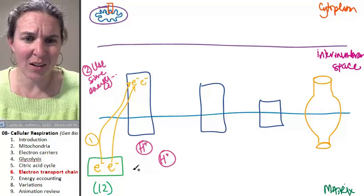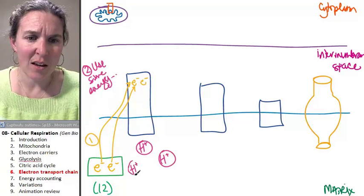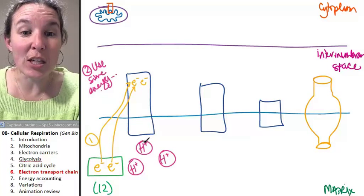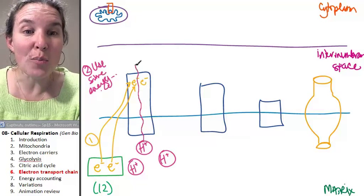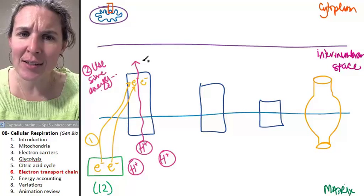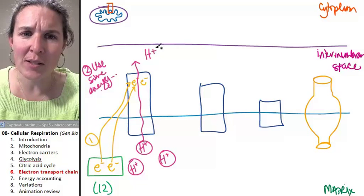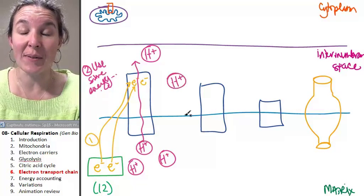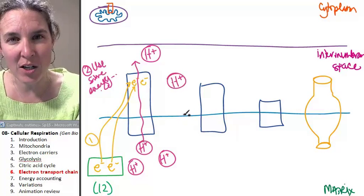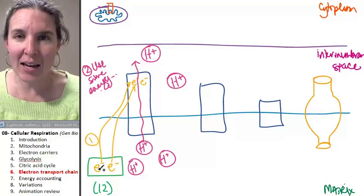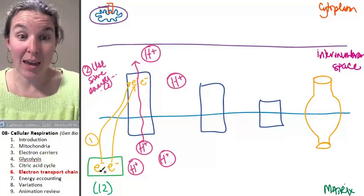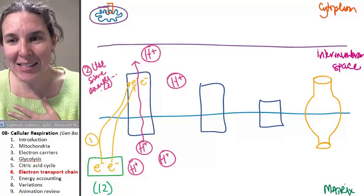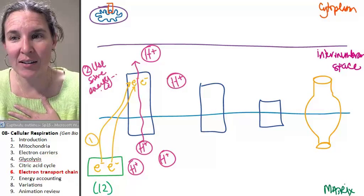You're going to be like, dude, really, what is this? The energy in the high-energy electrons is going to be used to pump hydrogen ions into the intermembrane space. And they're going in against their concentration gradient. That's how you know it's going to require energy. Who's providing the energy? The high-energy electrons that came from these carriers. I think of it as passing these electrons downhill.